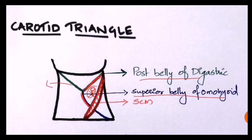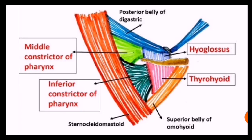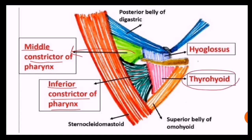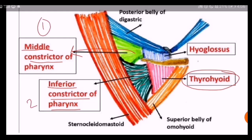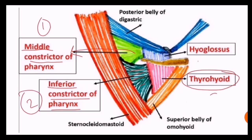The floor of the carotid triangle is formed by the middle constrictor of pharynx, the inferior constrictor of pharynx, and the thyrohyoid membrane. These three structures basically form the floor.